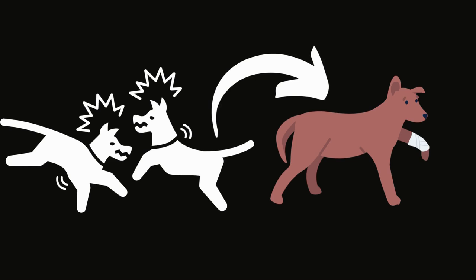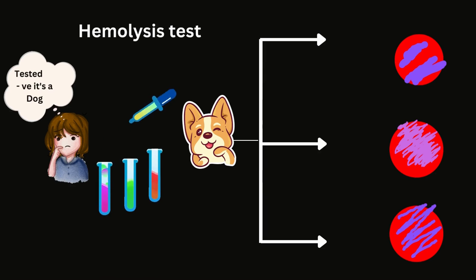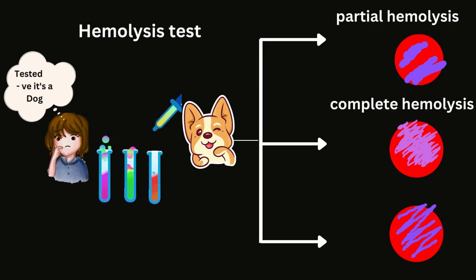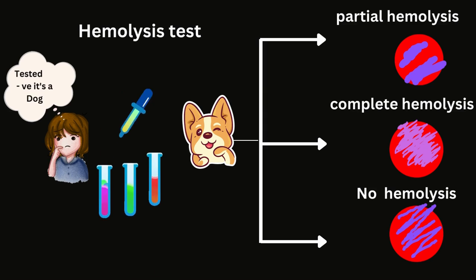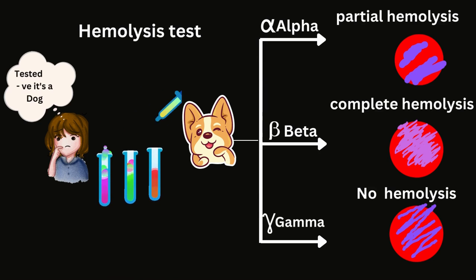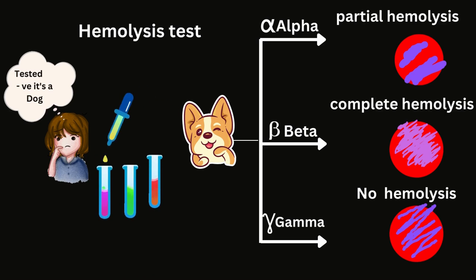Now we'll talk about the testing for the dogs, or the streptococcus bacteria. Since dogs are highly aggressive animals, they may scratch and fight, resulting in profuse bleeding. Hence, our first step is to perform hemolytic testing. There are three possible outcomes: complete hemolysis, partial hemolysis, and no hemolysis at all. These three outcomes are represented by three Greek letters — alpha, beta, and gamma. Since alpha looks like an incomplete infinity sign, it is associated with incomplete hemolysis. Since beta looks like a complete letter with no spaces, beta bacteria perform complete hemolysis. While gamma looks like nothing at all, hence it performs no hemolysis at all.